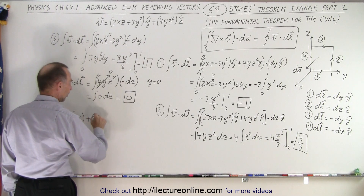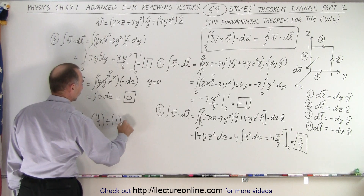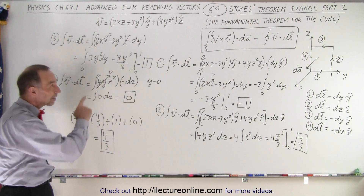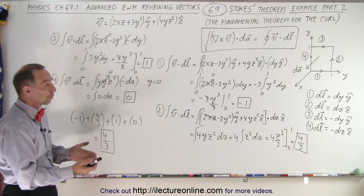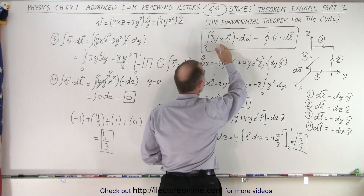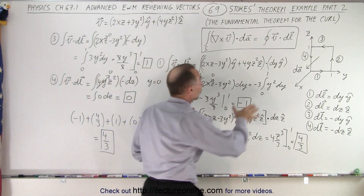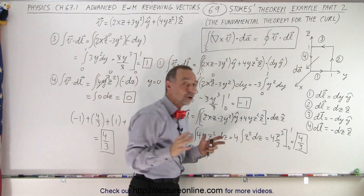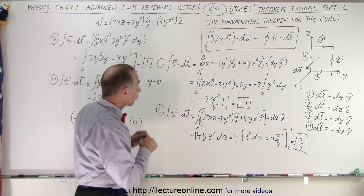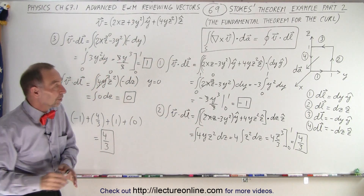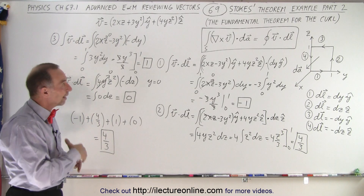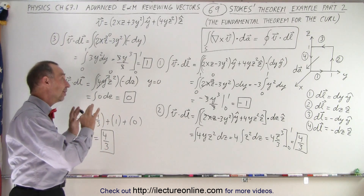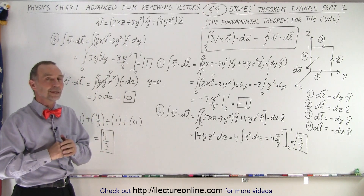Now we have all four values. Adding them together: negative one plus four thirds plus positive one plus zero — the negative one and positive one cancel, leaving four thirds. That is exactly the value we got for the left side of the equation in the previous video, so four thirds equals four thirds. Stokes Theorem is verified for this example: the left side equals the right side. It's good to know these theorems — sometimes one side is prohibitively difficult, and knowing Stokes Theorem lets you pick the easier side to evaluate.